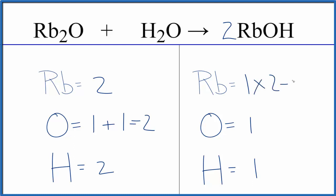One times two, that'll give us two. This two, it goes to everything here. So one times two, we have two oxygen atoms and one times two, we have two hydrogen atoms. And this equation is balanced.